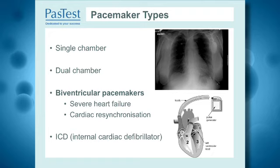The third pacemaker, implanted for more specialist indications, is the biventricular pacemaker. You'll note the same two leads as before — a right ventricular and right atrial pacing lead — but in addition there is a third lead that goes through the coronary sinus down one of the epicardial coronary veins to pace the left side of the heart. We do this because in patients with severe heart failure, the right and left ventricles fail to contract in a synchronised manner and cardiac output falls. By pacing from the right ventricular apex and the left ventricular apex simultaneously, we can restore synchronicity and increase cardiac output.